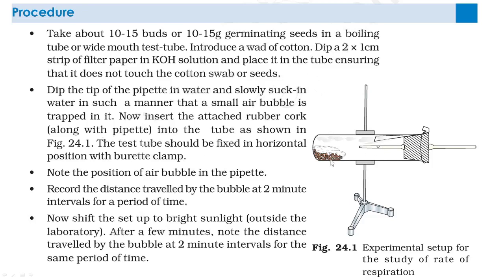The experimental setup uses germinating seeds. For example, if you take 10 grams of green dal, you can calculate the rate of respiration. You can also take 10 grams of beans. Keep the parameters the same — the experimental setup is the same, but you compare green dal at 10 grams versus beans at 10 grams. From the results you can find out which seed respires faster — green bean seeds or green dal seeds.